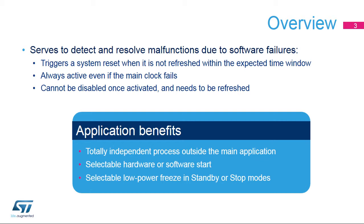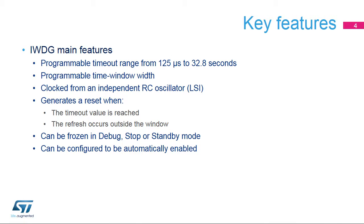One of the main benefits for applications is its ability to run independently from the main clock. The Independent Watchdog offers a wide range of timeout values, from 125 microseconds to 32 seconds. It is clocked by a 32 kHz RC oscillator, which cannot be disabled when the Independent Watchdog is enabled. It generates a reset when the program timeout value elapses, or when a watchdog refresh occurs outside a program time window.